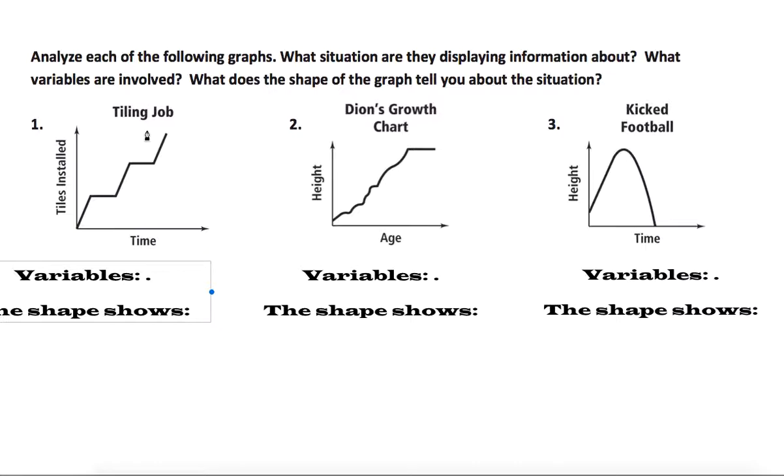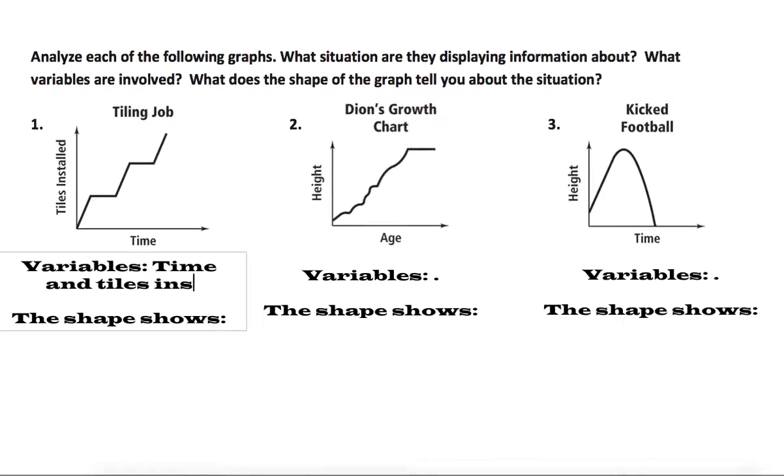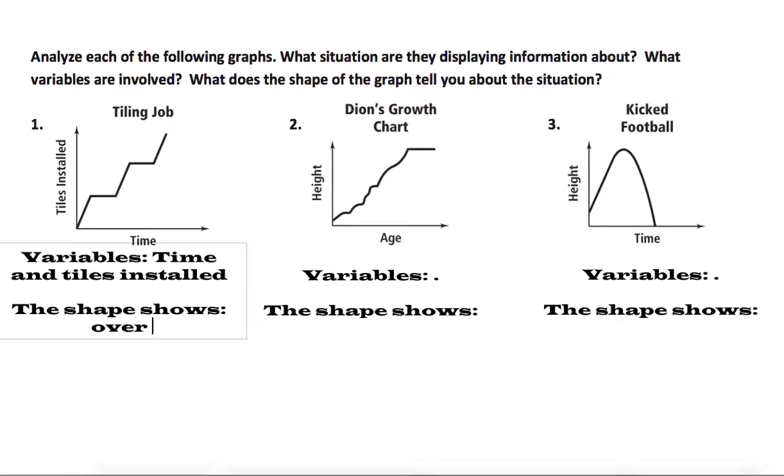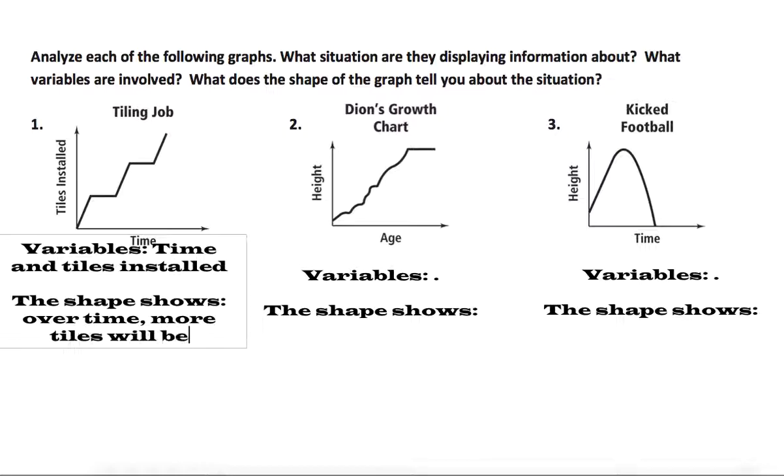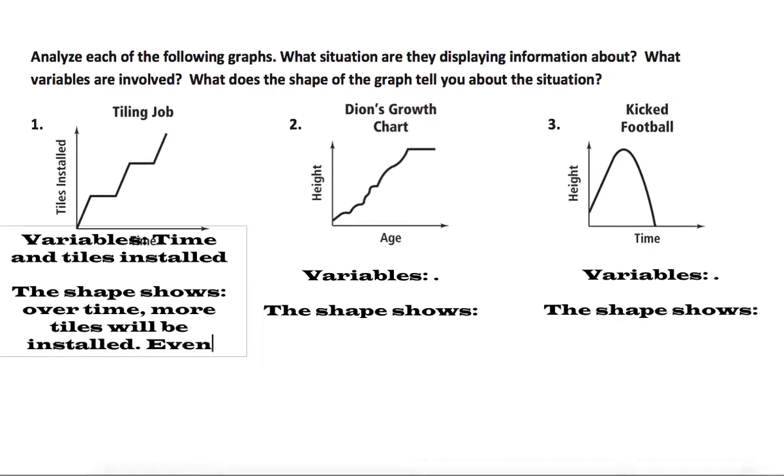We can also practice seeing what's up with these. With this first graph seen here, we're being asked to decide on the situation, what variables are involved, and what is the shape of the graph tell us. With this we have variables on the bottom of time and on the side tiles installed. The shape shows us that over time with this tiling job, more tiles will be installed. So they might start small, they might take a break here, work pretty heavily, take a break, work heavily again. The shape shows that over time more tiles will be installed even if there is a break period.